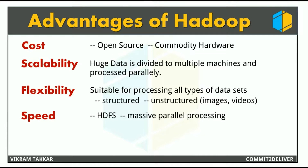The fourth advantage is speed. Hadoop follows a distributed file system model in which a file is broken into pieces and processed in parallel, providing better performance and relatively faster speed compared to traditional relational database management systems. If you are dealing with a large volume of unstructured data, Hadoop is able to efficiently process terabytes of data in just minutes and petabytes of data in hours.